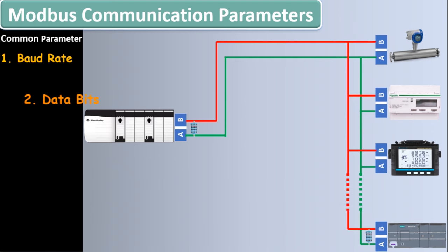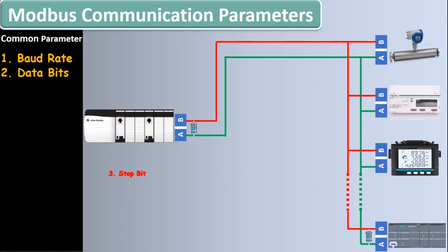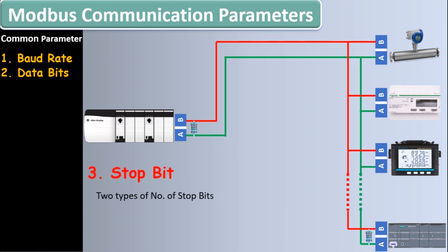The third common parameter in RS485 communication is the stop bit. All devices in the same RS485 network must have the same number of stop bits. Stop bit is used for detection of the end of a frame — when a receiver receives data, it must know when the frame or data has ended. There are two types of stop bits.